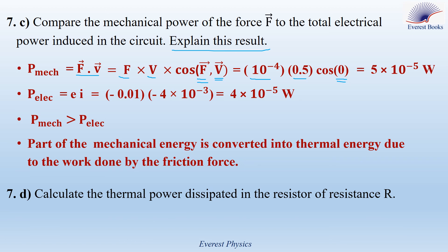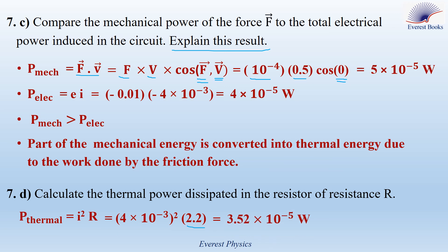Part 7D: calculate the thermal power dissipated in the resistor R. Using P_thermal = I²R: with I = 4×10⁻³ A and R = 2.2 ohms, P_thermal = (4×10⁻³)² × 2.2 = 3.52×10⁻⁵ watts.